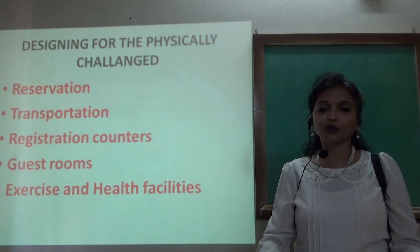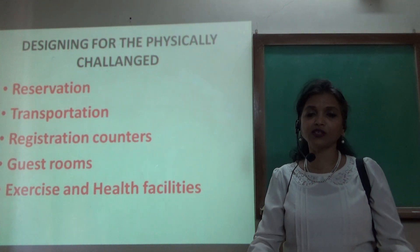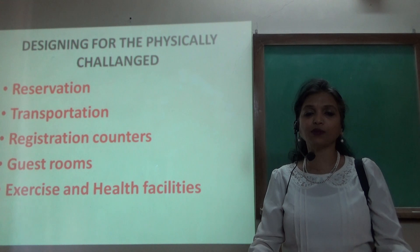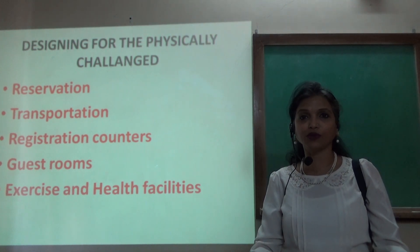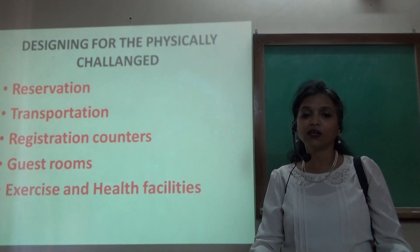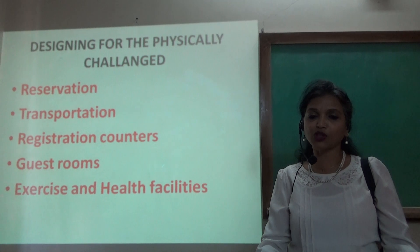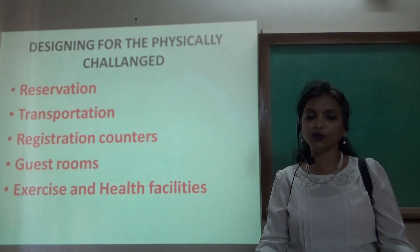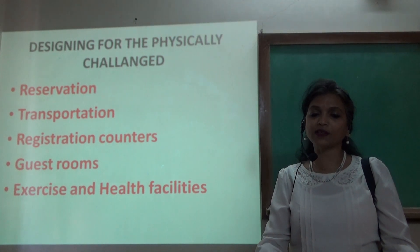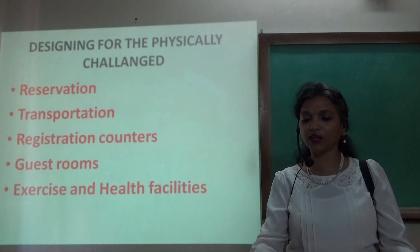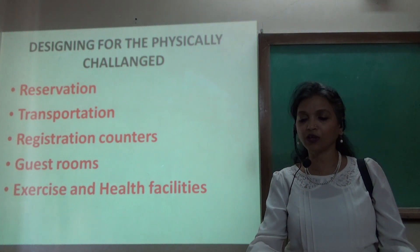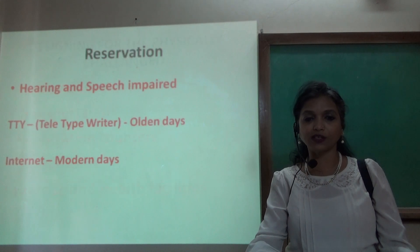We start with reservations — that is the point of contact when the guest makes a reservation to come to the hotel. We also have transportation, registration counters, guest rooms, and exercise and health facilities. These are the things which should be compatible for a physically challenged guest.